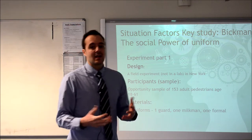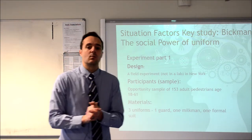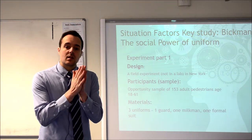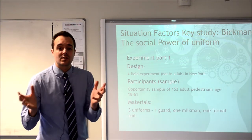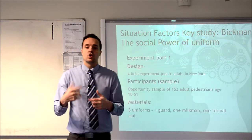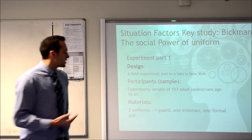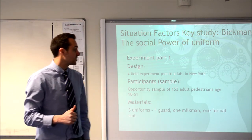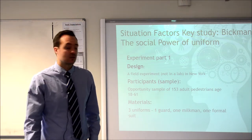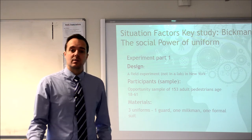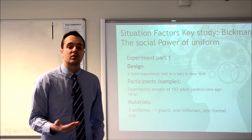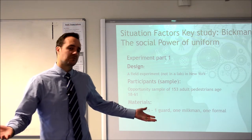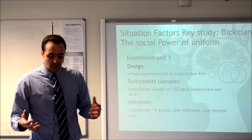To get you started - experiment one. The design of this experiment was a field experiment. It was done out in a real life situation - the experimenters were out on the streets of New York. It was a field experiment and not a natural experiment because even though it was in a real world scenario, they were still controlling the independent variable. The participants were an opportunity sample - whoever was conveniently passing by at the time - and the sample consisted of 153 adult pedestrians. Age was estimated because these people were randomly approached on the street and didn't know they were part of a study.